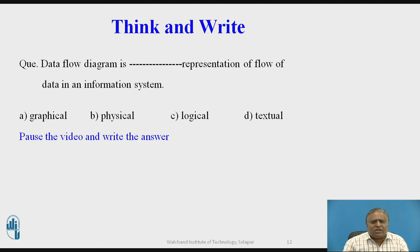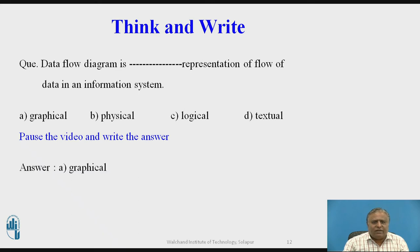Now I am going to ask a question. Pause the video and write the answer. Question: a data flow diagram is a dash representation of the flow of data in an information system. A) graphical, B) physical, C) logical, D) textual. The correct answer is A) graphical. A data flow diagram is a graphical representation of the flow of data in an information system.